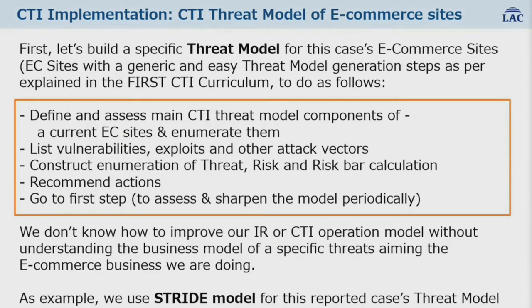The second takeout is the threat model of the e-commerce business. We wouldn't be able to investigate the case well without knowing their threat model. First, we define and assess the CTI threat model components of the current e-commerce sites and enumerate liabilities including vulnerabilities, exploits, and other attack factors. Then we construct enumeration for threat risk and risk bar calculations, recommend actions to prevent attacks, and reassess the model to make it more effective in the next period. In this example, we are using the STRIKE model for the reported case.